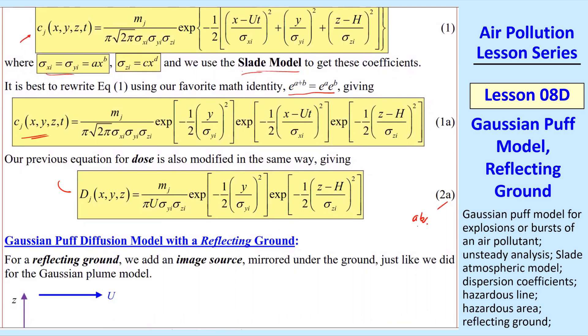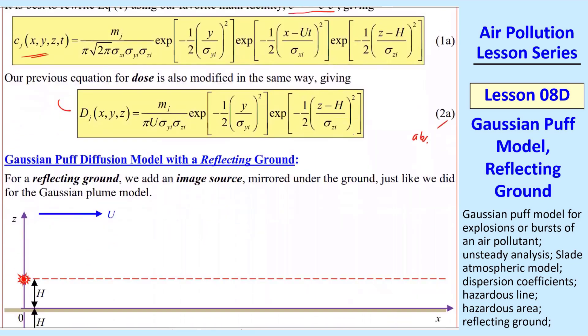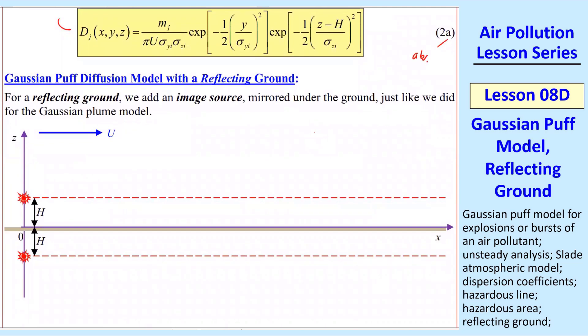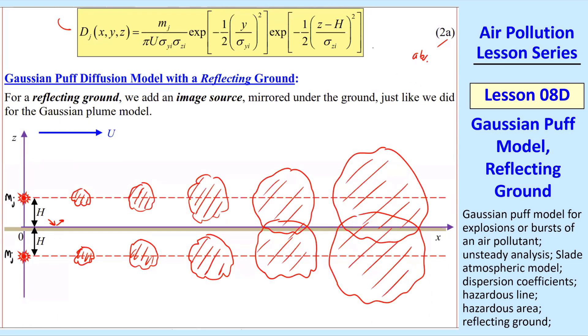Now my goal is to write 1r and 2r equations for the reflecting ground. This is very similar to what we did with the plume. We'll put an image source underneath the ground to pretend there's another source. We'll add that in to model the reflection. We added an identical source of the same mass, mj, h below the ground instead of h above.